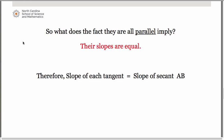The slope of each tangent can be denoted by the derivative and the slope of the line that connects the secant AB is simply a regular slope equation. So f of b minus f of a all over b minus a.